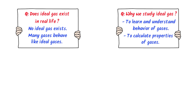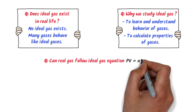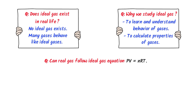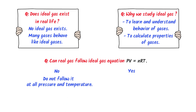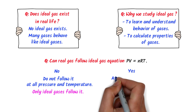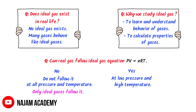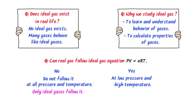Finally, my favorite question is: can real gas follow the ideal gas equation PV = NRT? The answer is both no and yes. The answer is no because real gases do not follow the ideal gas equation PV = NRT at all pressures and temperatures — only ideal gas follows this equation at all pressures and temperatures. The answer is yes because at low pressure and high temperature, real gases also follow the ideal gas equation PV = NRT. Remember that real gases do not follow the ideal gas equation except at low pressure and high temperature.